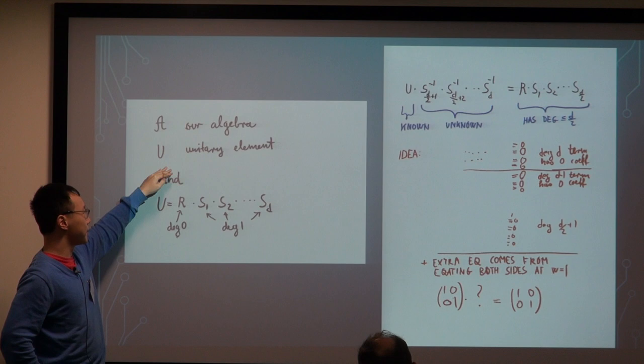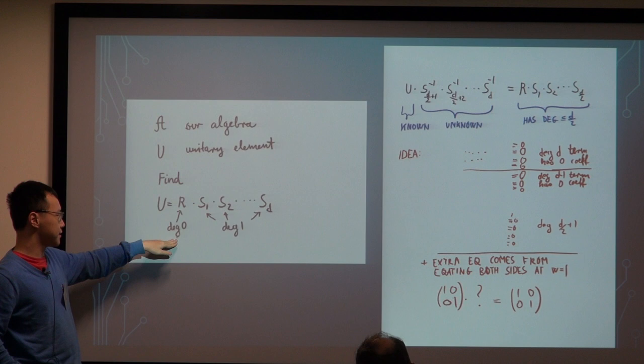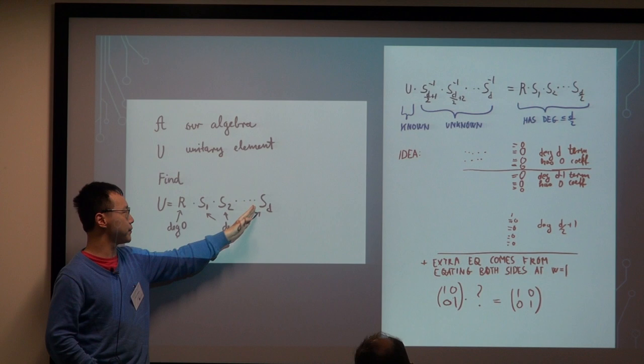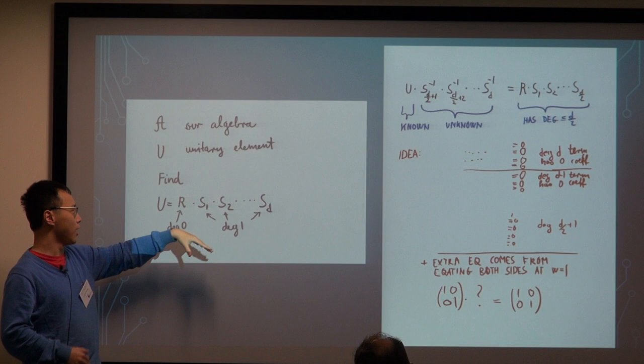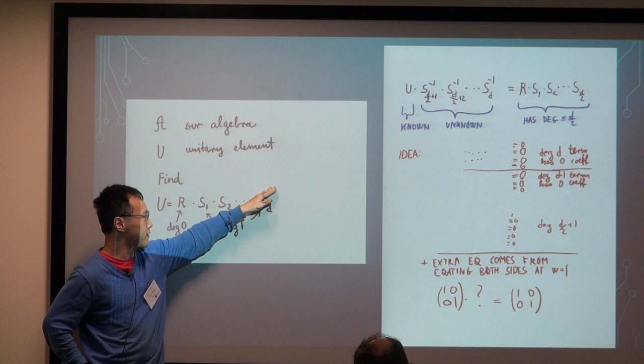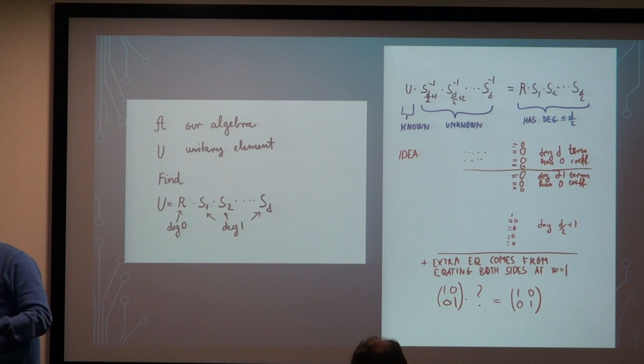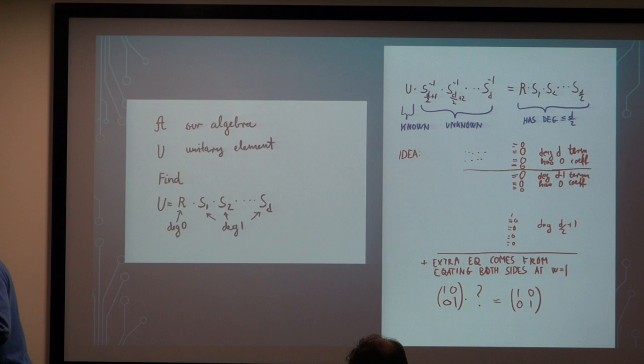What the existing method is, is that we already know this unitary element must be a product of a degree zero element with a bunch of degree one elements. So if we can solve for these degree one elements, one by one, by unraveling this product, then we can successfully recover all the elements that multiply to U. So the existing method is just carving out this SD part, and then SD minus one, SD minus two, up to S one. That's the comparison I will make through the experiments.